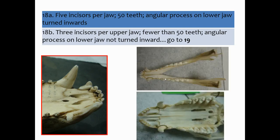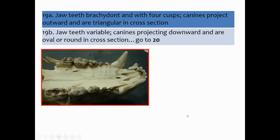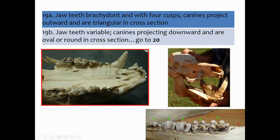Couplet 19: jaw teeth variable, canines projecting downwards and oval or round in cross section — go to 20. The jaw teeth here are projecting downward, not going in all different directions. The contrasting example shows teeth going in all kinds of different directions — that's not what we have. So we've got downward projecting teeth, and we go to 20.